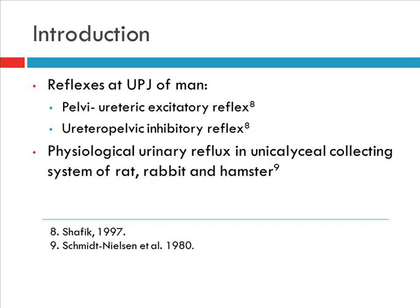Further studies have also been carried out on the unicollecting system to see how urine flows in these systems. These studies were carried out in the 1980s by Schmidt and Leeson, and they did demonstrate that there is backflow of urine in these unicollecting systems during high flow rates. So at this point, we are seeing there is some slight physiological difference at the structural level of the PUJ.